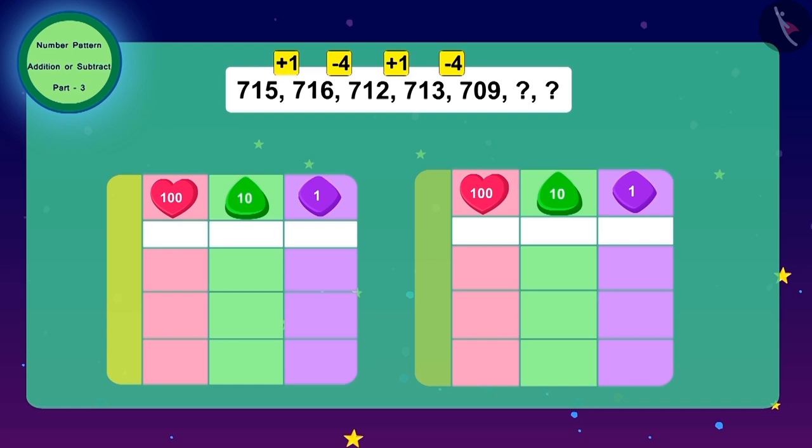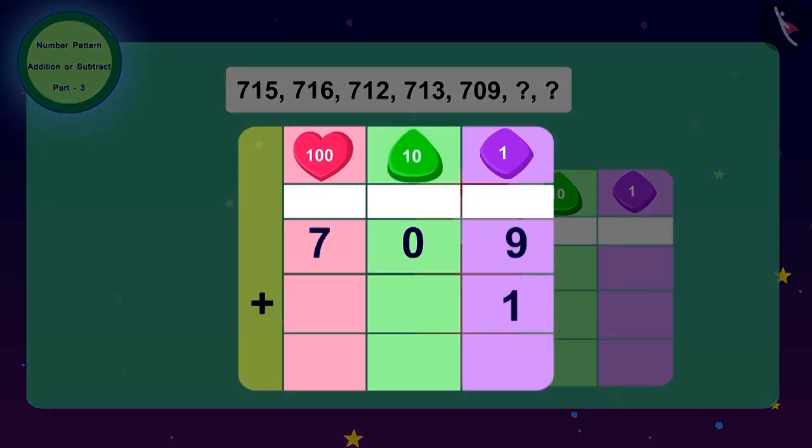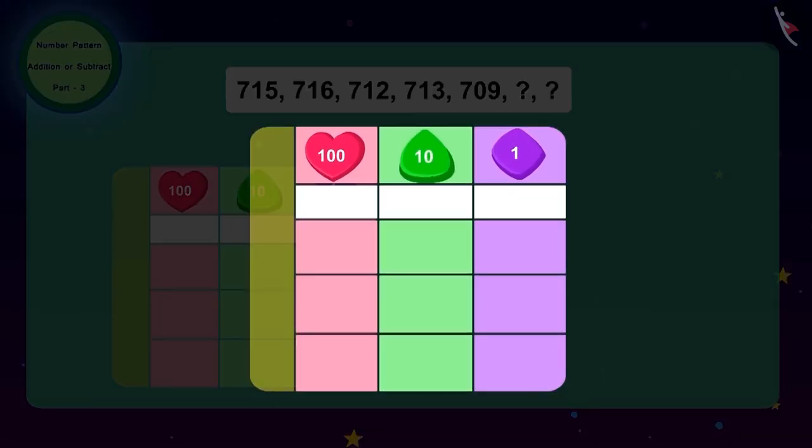And this has to be repeated. So to get the next number of the code, we have to add one to 709. How much is it? 710. Now what should we do to get the next number? We will have to subtract four from 710, and the last number of our code becomes 706.